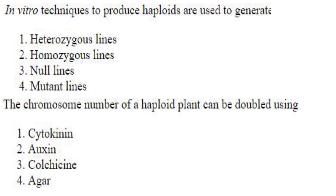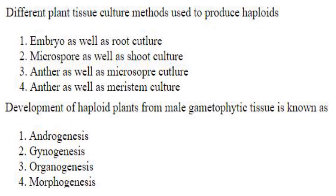In vitro technique to produce haploids is used to generate homozygous lines. The chromosome number of a haploid plant can be doubled using colchicine. Answer is option 3. Different plant tissue culture methods used to produce haploids: embryo and root culture cannot give rise to haploids — they are diploids. Microspore can give rise to haploid, but shoot culture cannot. Anther as well as microspore can be used for the production of haploids. Anther and meristem culture — anther okay, but not meristem. So answer is option 3.